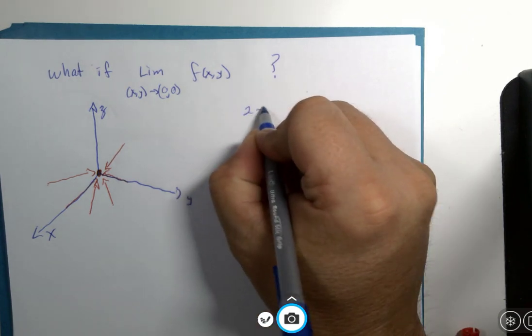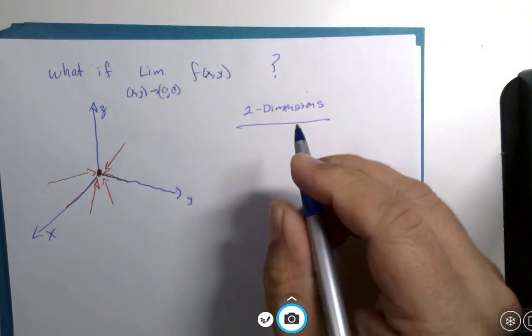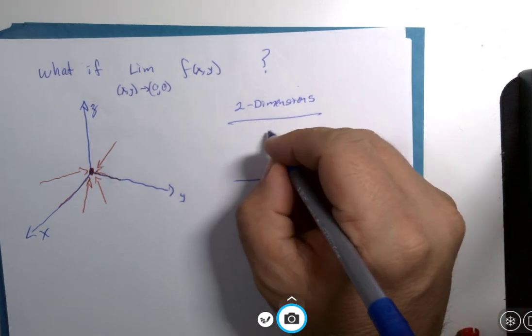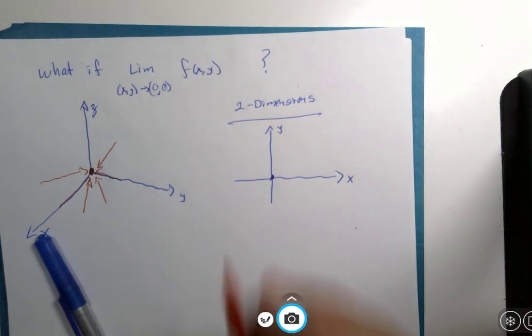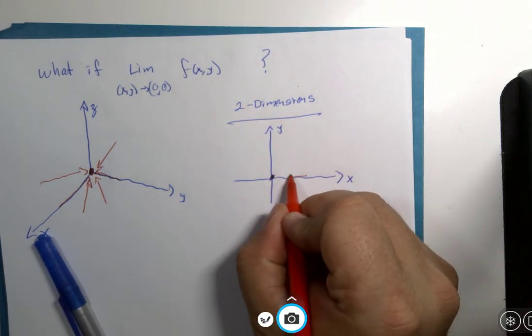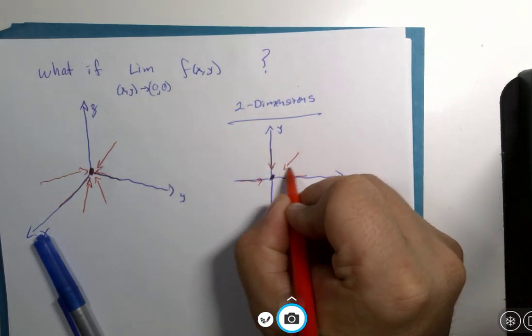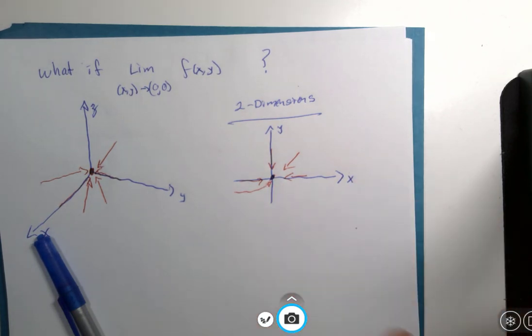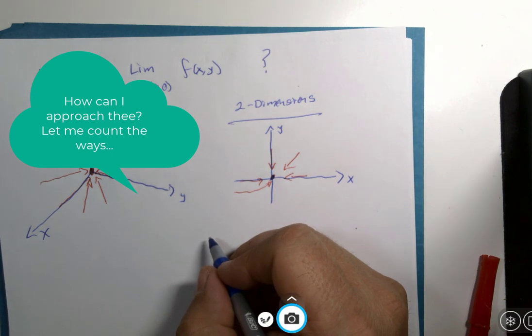In two dimensions, if I just look from the top view, there's zero, zero. I can approach from the right or from the left, from the top, from an angle over here, from this direction here. Look at that, I did a little curve in there. We can approach the origin from infinitely many directions.